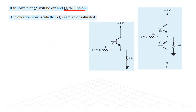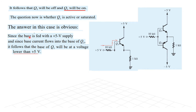The question is whether Q1 is in active mode or in saturation mode. Since the base is fed with a 5V supply, and since the base current flows into the base, it follows that the base of Q1 will be at a voltage lower than 5V — current can only flow when the base voltage is lower than 5V. Let's assume it is 2V, so the base is at 2V. From 5V to 2V, yes, current will flow.